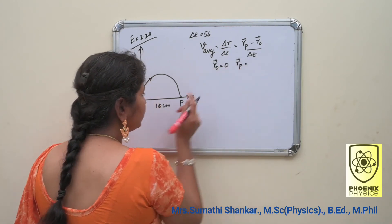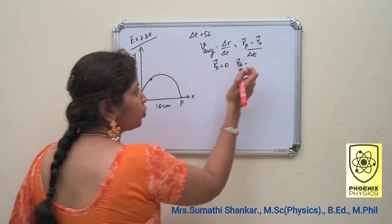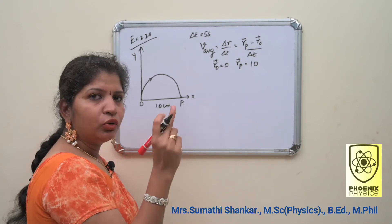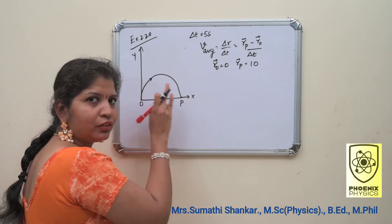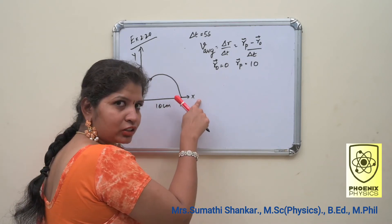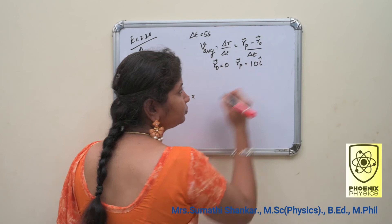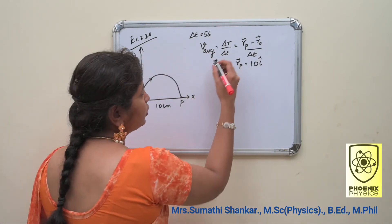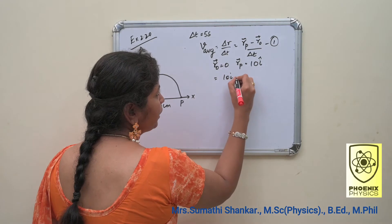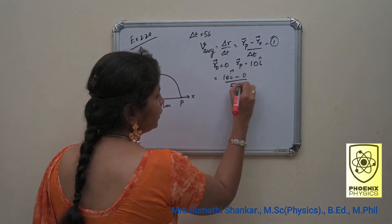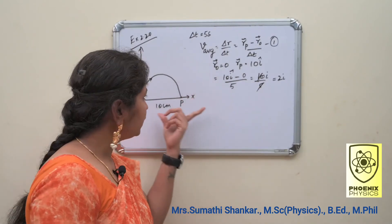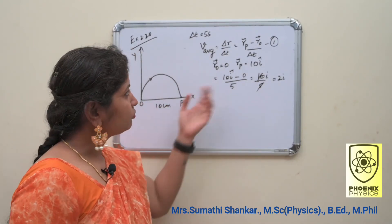What about the value of Rp? The magnitude is 10 cm as given. Rp is the position vector, which starts from the origin, and it is in the x direction, so we can write it as 10i. Substituting this value: 10i minus 0 divided by 5 seconds gives 10i divided by 5, which equals 2i. The average velocity is 2 cm/s in the positive x direction.